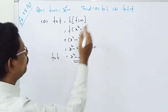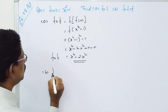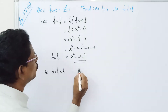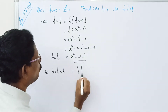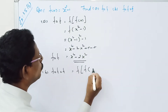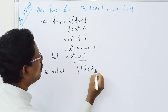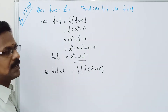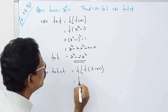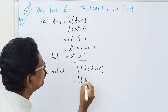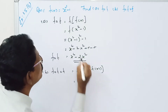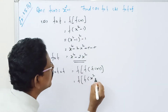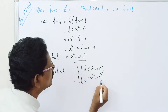Now part b: f composition f composition f, that is f of f of f of x. We write this as f of f of x, where f of x equals x squared minus 1.